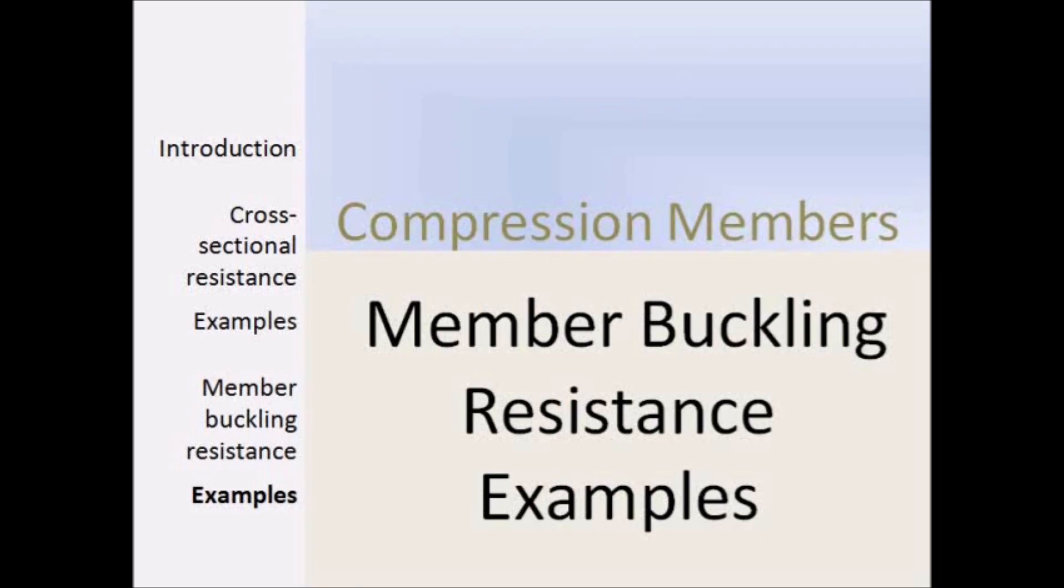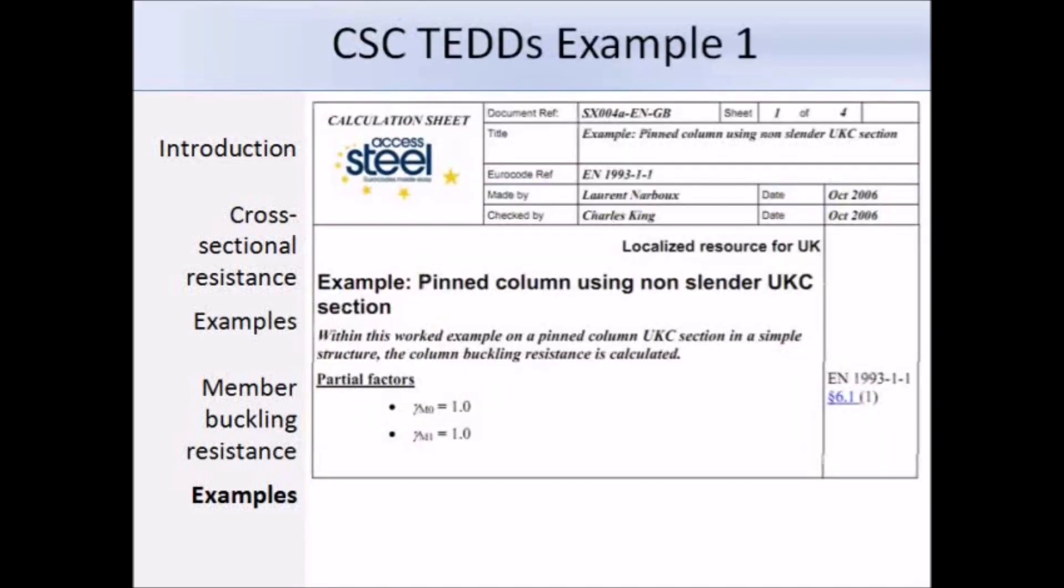This is the first example I'll go through, and it's taken from the CSC TEDDS website. We're dealing with a pinned column using a non-slender universal column section. We need to calculate the buckling resistance. Here are the partial factors that we will be using, and they're both 1, the same in both the Eurocode document and the UK National Annex.